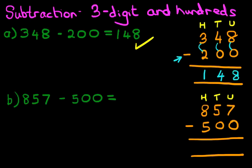Now that we have rewritten the question, we are ready to go ahead and do the calculation. Remember, we are minusing. Let's start with the column on the right-hand side, the units column. What is seven minus zero? The answer is seven. Now the tens column — what is five minus zero? The answer is five.